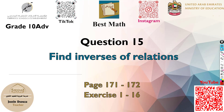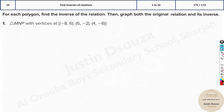The final question in part 1 is question 15. It is to find inverses of relations. Here we have been told this is a triangle M and P, and the vertices are given. You need to find the inverse.